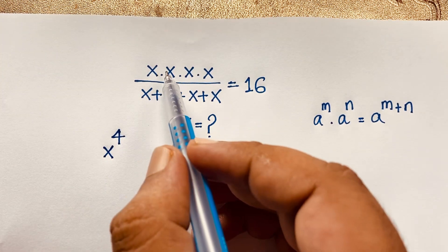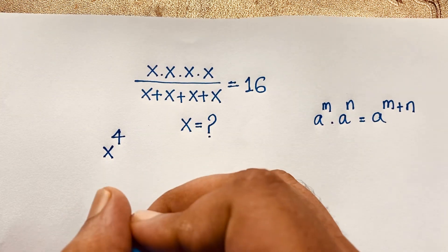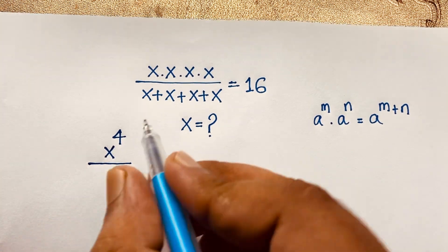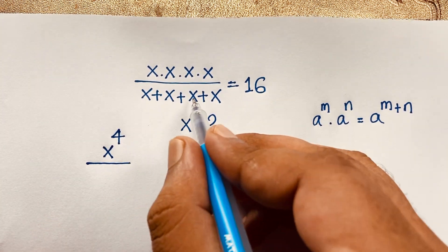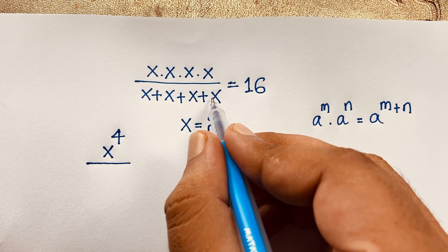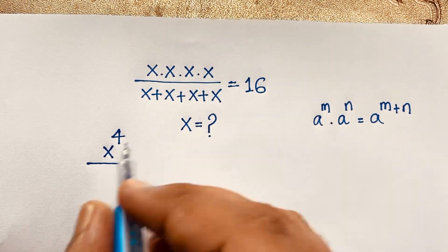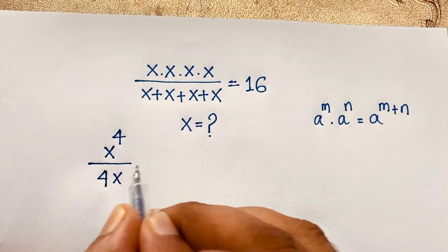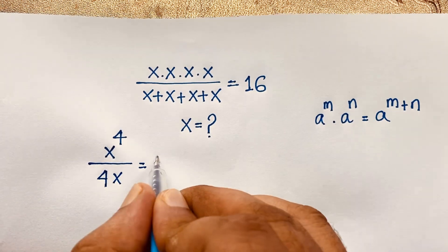x times x times x times x is x to the power 4 in the numerator. In the denominator, x is common, so x plus x plus x plus x equals 1 plus 1 plus 1 plus 1 times x, which is 4x. So we have x to the power 4 over 4x, and this simplifies so we can see 4x is equal to 16.